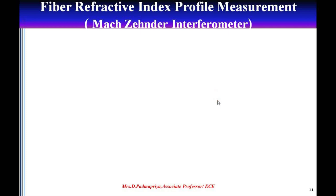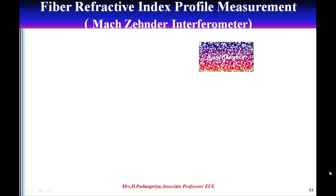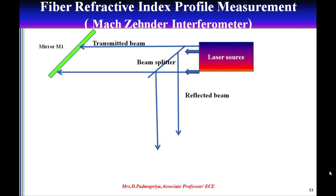Fiber refractive index profile measurement: the refractive index profile of the fiber is an important parameter that determines the characteristics of optical fibers. Using this measurement, the numerical aperture of the fiber and the number of modes propagating within the core can be measured. There are two different methods used: one is called the Mach-Zehnder method, which is based on transmitted light; the other is called the Michelson method, which is based on reflected light. We will see the Mach-Zehnder method now.